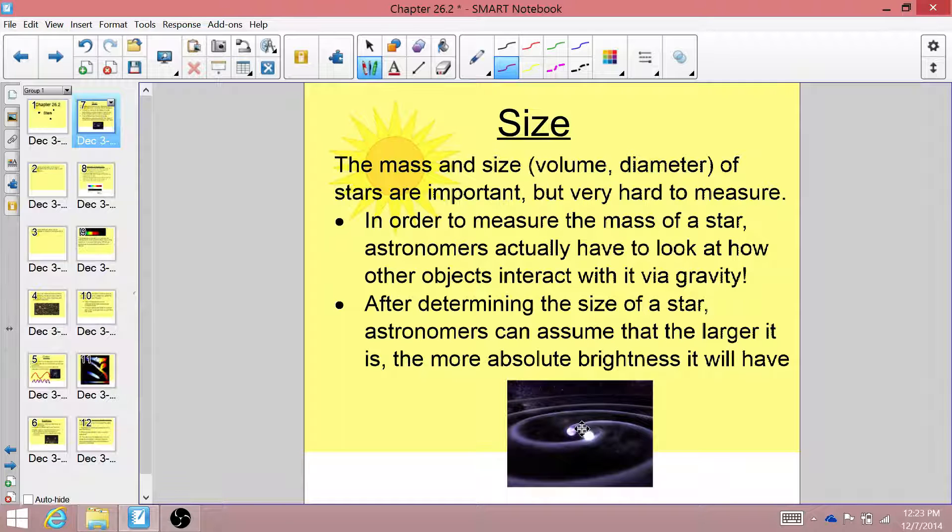We can actually look out at other stars, let's say these two stars, and we can determine how far apart they are and how fast they move around each other. And that will tell us the mass of those stars, which one is larger and which one is smaller. And it will actually give us an absolute mass based on some very cool physics equations.